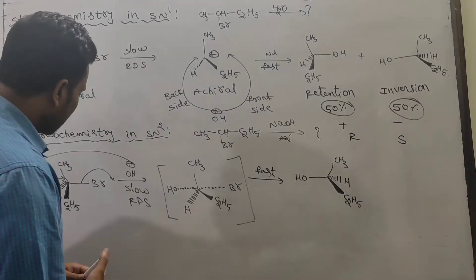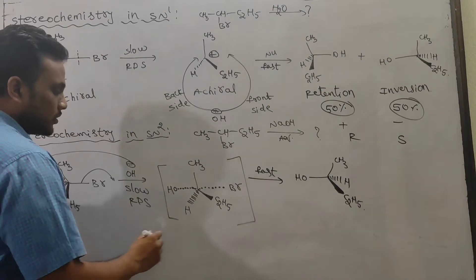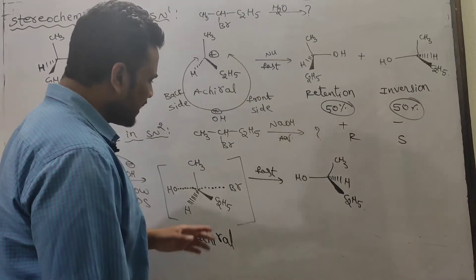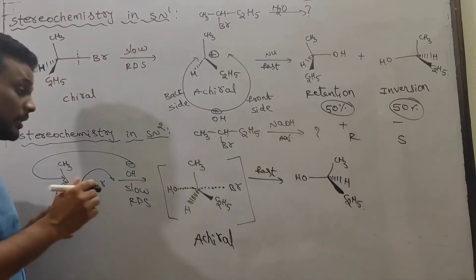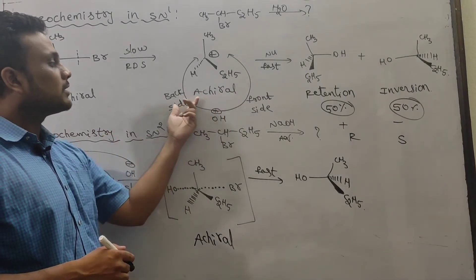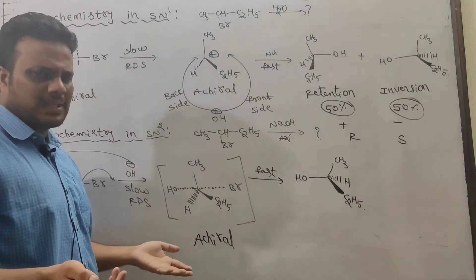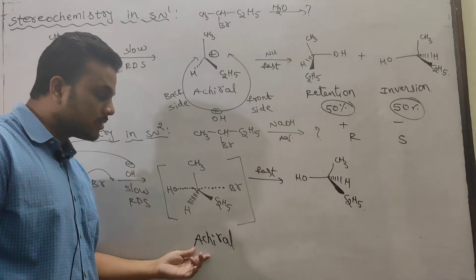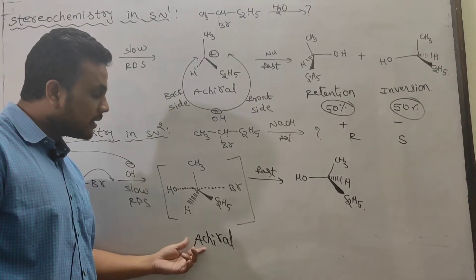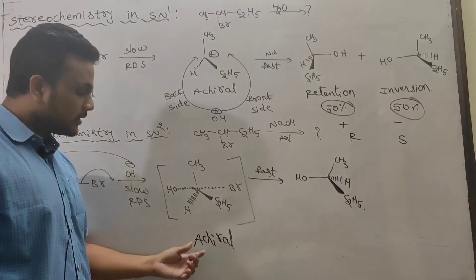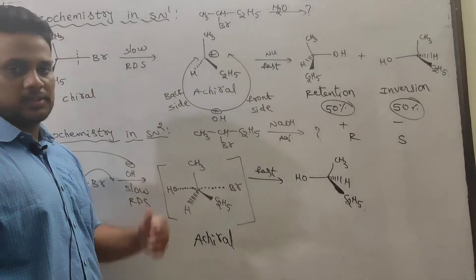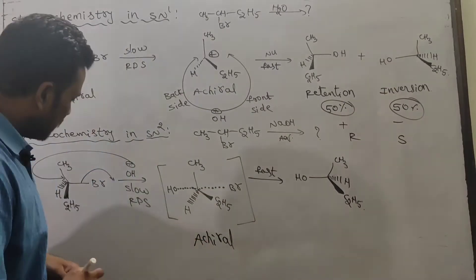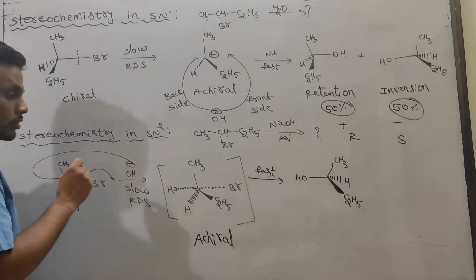In SN2, backside attack takes place and a transition state is formed — it is sp2-like and chiral. Note that in SN2 we cannot focus on the transition state because it has a fleeting arrangement; it is even less stable and more short-lived than a reaction intermediate. SN2 is a single-step process, so attack takes place exclusively from the back side — there is no chance of frontside attack in SN2 mechanism.